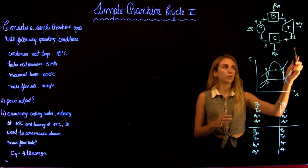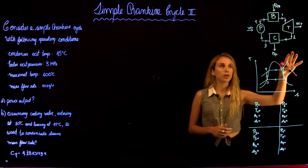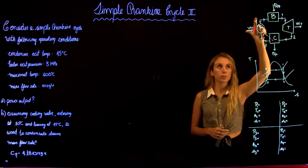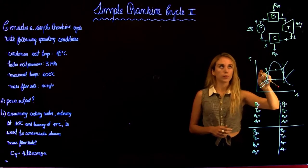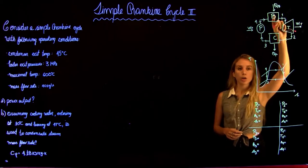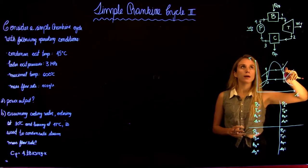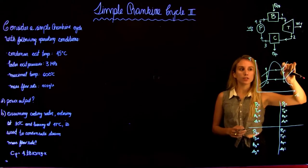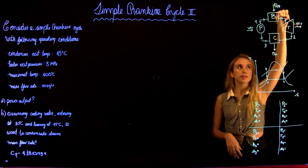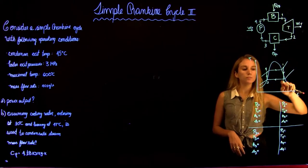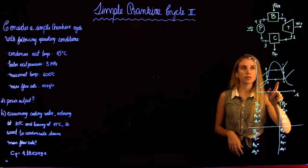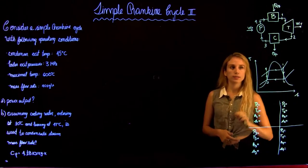We can see that we already have our simple Rankine cycle. We have liquid entering the pump, where it's going to get compressed — going from the low to the high pressure. The compressed fluid is going to get heated up in the boiler to state 1, where we're going to have a phase change. Here we can see we are in the superheated phase. Then the steam is going to enter the turbine, get expanded into state 2, and then enter the condenser and be converted back into liquid in state 3.